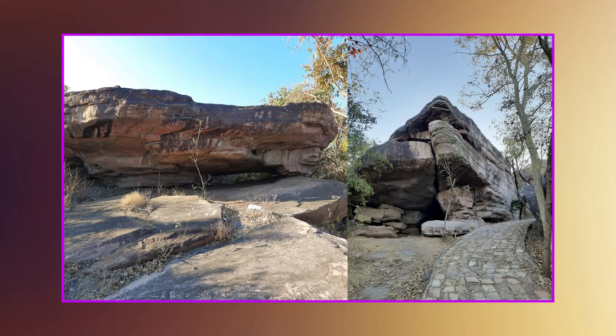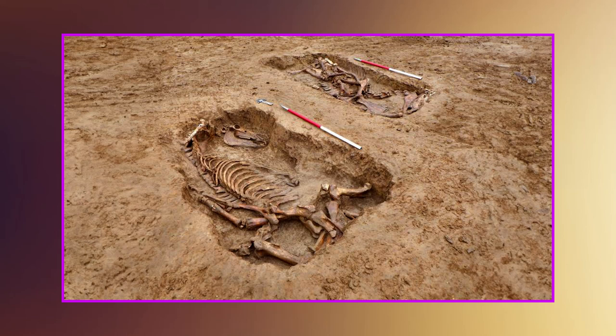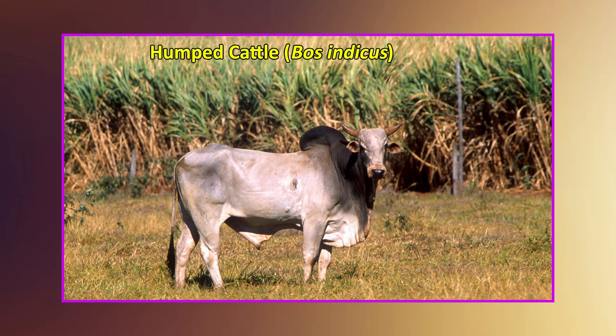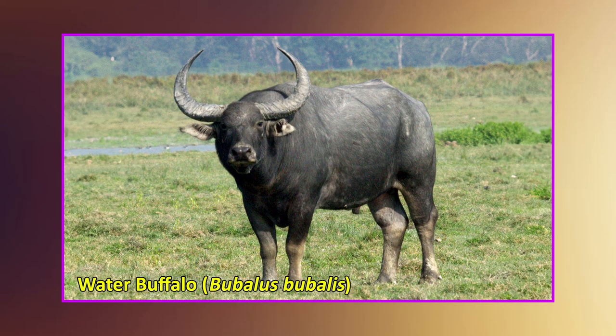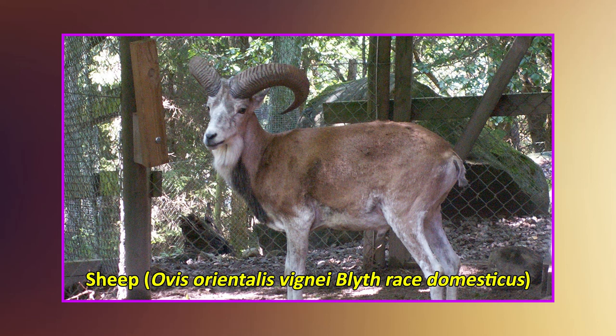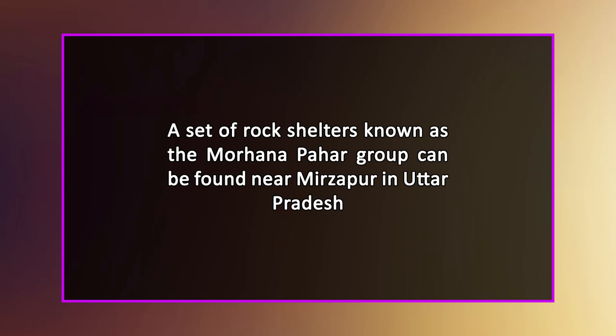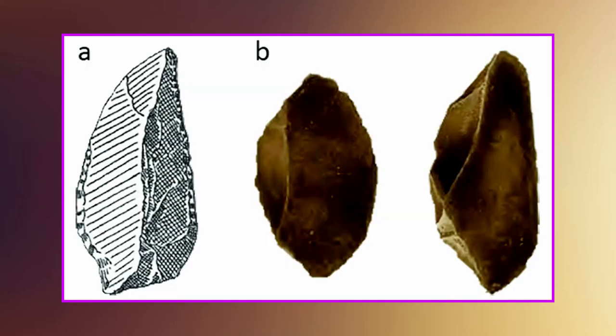The clearest evidence of animal domestication in India comes from the Adhangra Hill in the Narmada basin — a rock shelter with Mesolithic stone tools, microlithic tools, animal bones, and ceramics found in a thick layer of black soil varying in depth from 15 to 150 centimeters. The animal bones found comprise domestic dog (Canis familiaris), Indian humped cattle (Bos indicus), water buffalo (Bubalus bubalis), goat (Capra hircus), domestic sheep (Ovis orientalis), pig (Sus scrofa), and others. Rock shelter art near Mirzapur in Uttar Pradesh also depicts domesticated horses transporting wheeled vehicles.